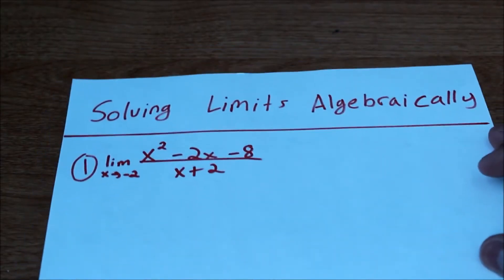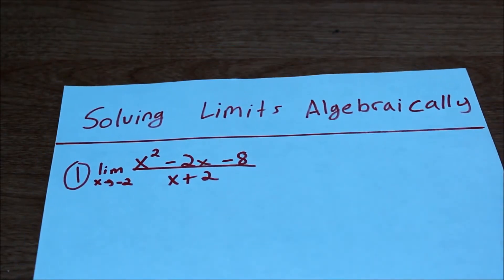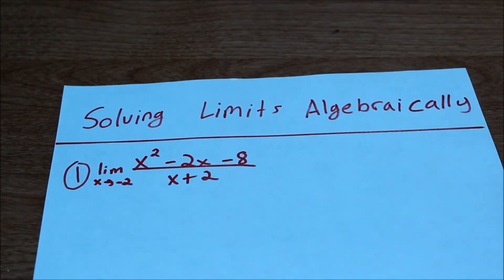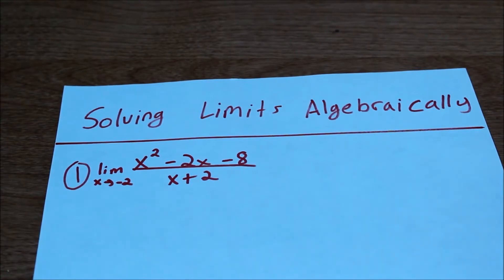Now let's move on to something a little more difficult. We want to solve a limit algebraically — not with a table of values, not with a graph, just using algebra. We're going to use some algebraic tricks — algebraic magic, algebraic gymnastics — whatever you want to call it. We're going to factor, multiply by the conjugate, and do all sorts of things to make this work.